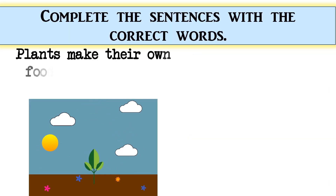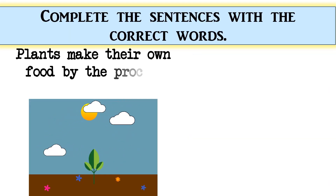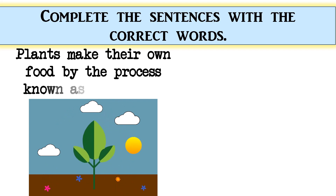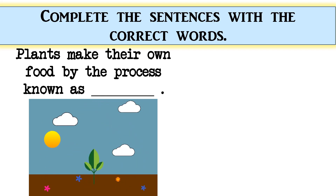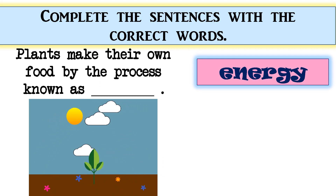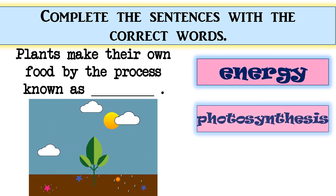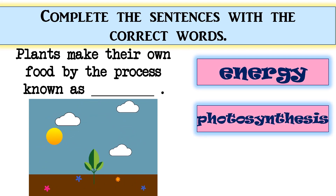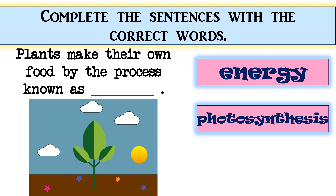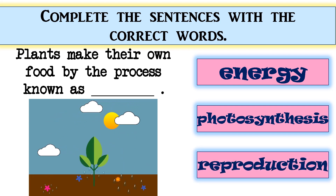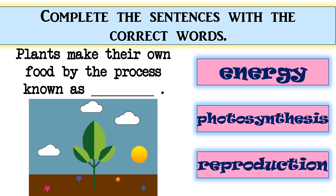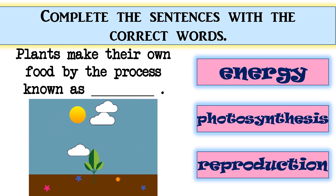Plants make their own food by the process known as blank. The options are: energy, photosynthesis, or reproduction. The correct answer is photosynthesis!